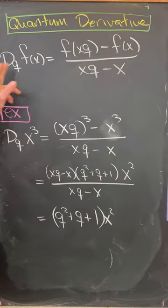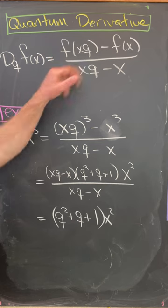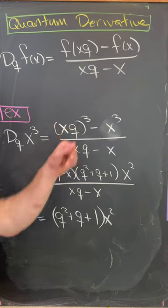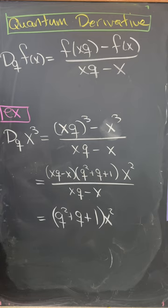So in this case, the quantum derivative of a function is f evaluated at x times q minus f evaluated at x, over x times q minus x.